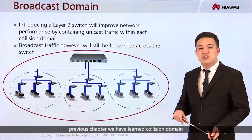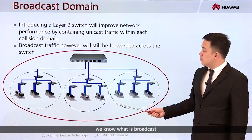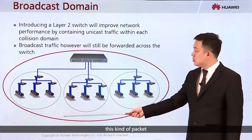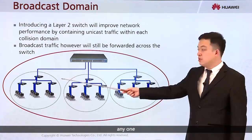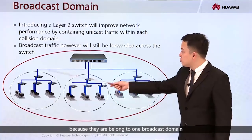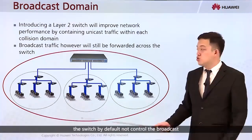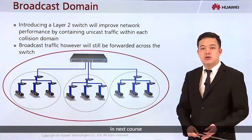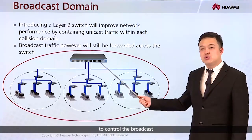In the previous chapter we learned about collision domains. Now we introduce the broadcast domain. We know what a broadcast is — such as an ARP request. When one PC forwards a broadcast to the switch, the switch forwards it to all other ports, because they all belong to one broadcast domain. By default, a switch does not control broadcasts. All ports are in the same broadcast domain. In the next course, I will introduce how to use VLAN to control the broadcast.